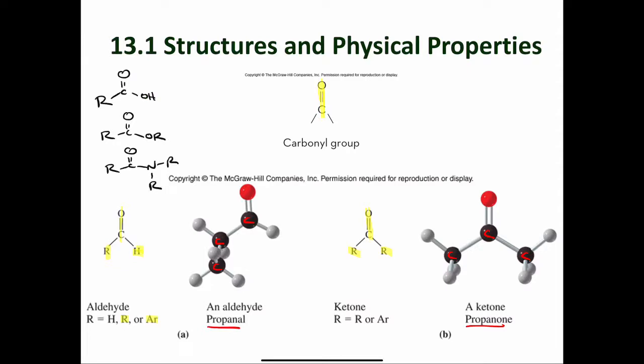If you've memorized all of your functional groups, you would also know that carbonyl groups are found in carboxylic acids, esters, and amides. The take-home message is that aldehydes and ketones both possess carbonyl groups, and you should recognize that a carbonyl group contains a polar bond. The carbon-oxygen double bond is polar because oxygen has an electronegativity of around 3.5 and carbon has an electronegativity of about 2.5.